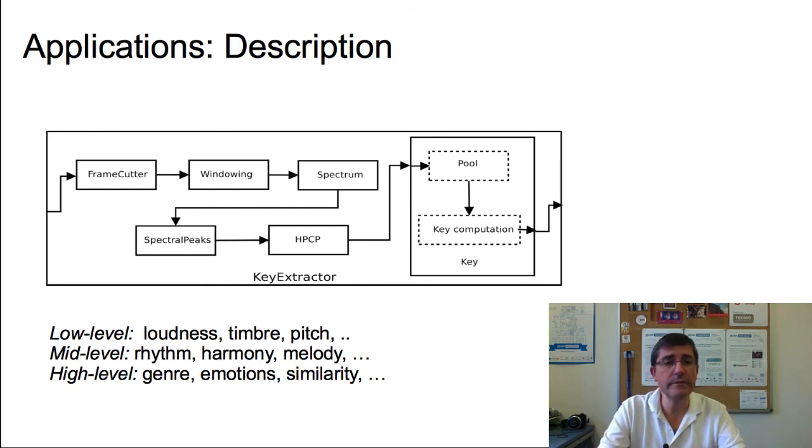Or we can refer to what we call mid-level descriptors that are more musically meaningful and talk about concepts like rhythm, harmony or melody, and finally we can talk about high-level descriptors, things that are much closer to us, to our perception of music, and these might relate to concepts like genre or the emotions of a piece of music, or the concept of similarity, what is similar to what.